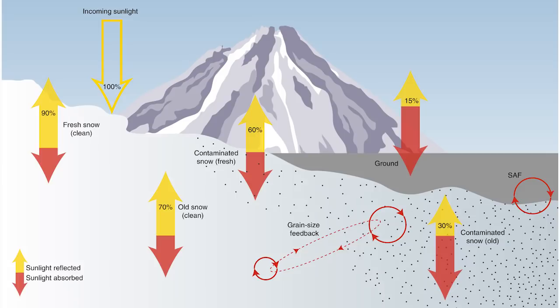On bare ground, about 85 percent of sunlight is absorbed on average and only 15 percent gets deflected. When we have contaminated snow — really old snow with big grains, not a very consistent layer of powdery snow — we see 30 percent reflected. So already with really degraded snow we see double the reflection of that incoming sunlight.